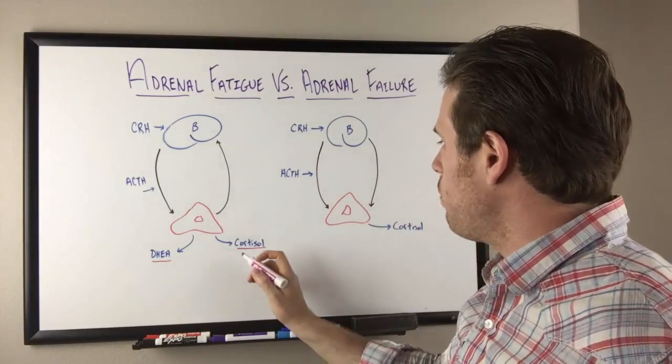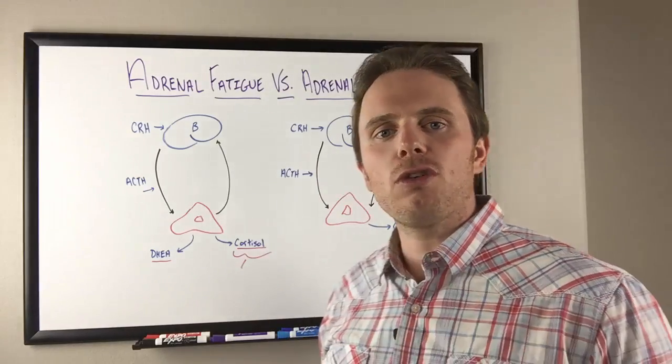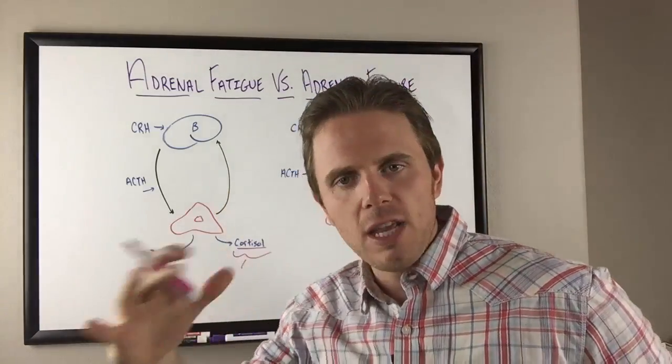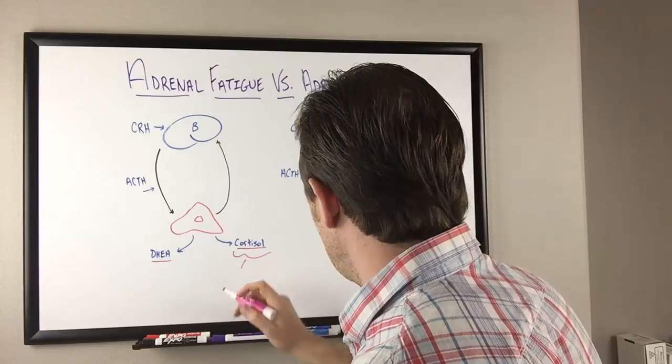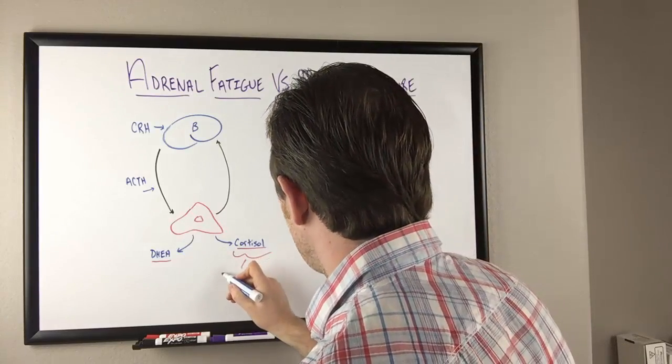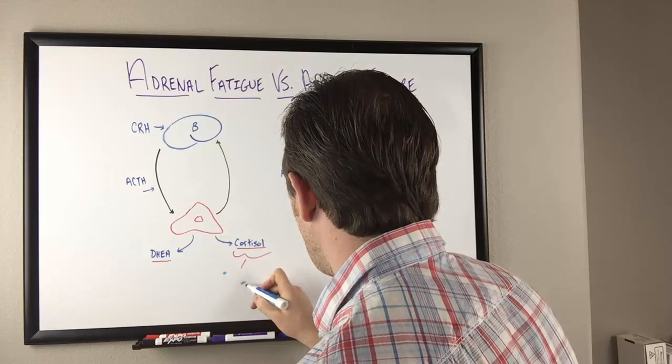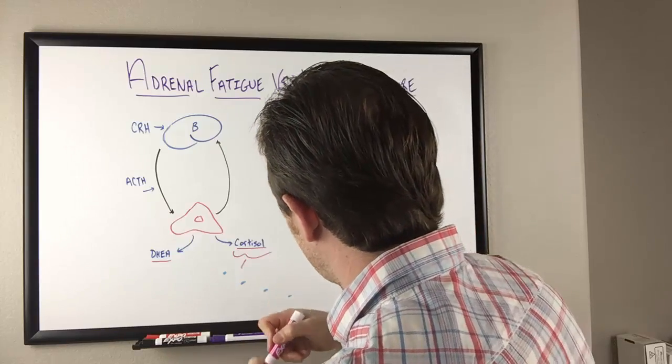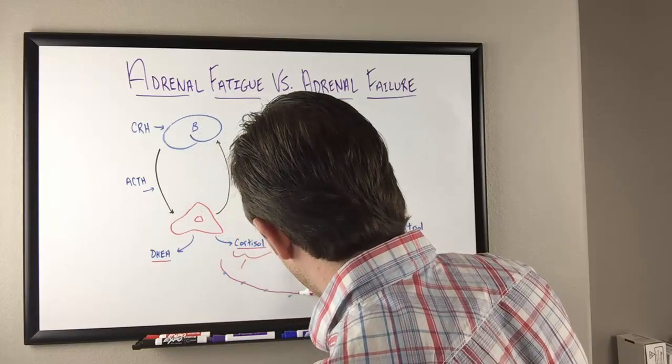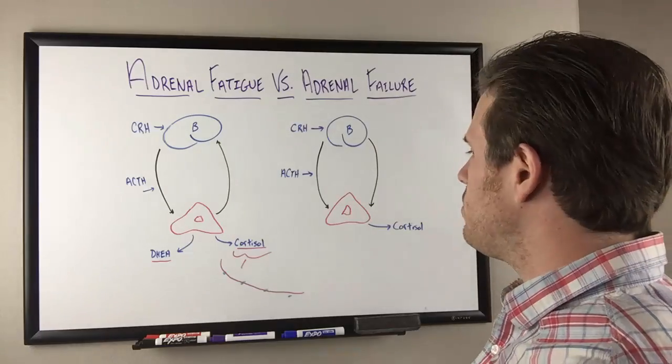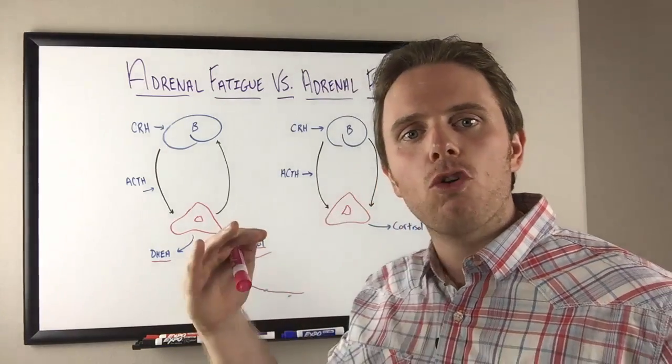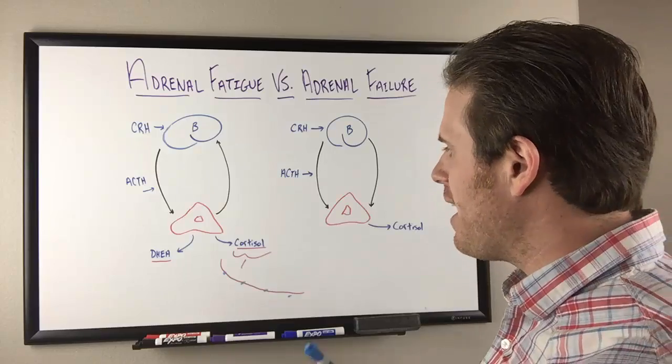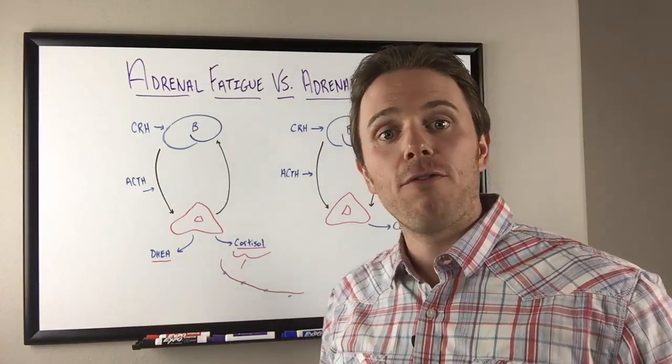Cortisol comes out in a circadian fashion. It's like a roller coaster ride, higher in the morning and then drops throughout the day. We have this nice rhythm where cortisol is higher in the morning, lower in the afternoon, and lowest at night. It's not just the amount of cortisol, it's the rhythm as well. DHEA is our anti-aging hormone that helps buffer stress, buffer inflammation, and support the immune system.